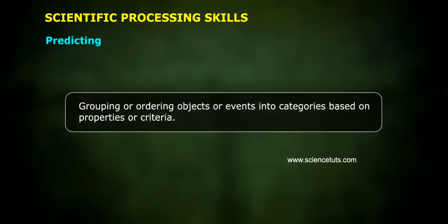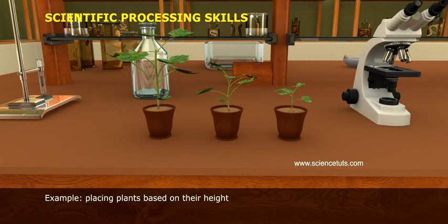Predicting: Grouping or ordering objects or events into categories based on properties or criteria. Example: Placing plants based on their height.